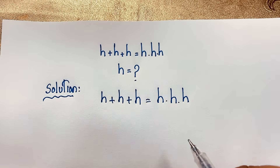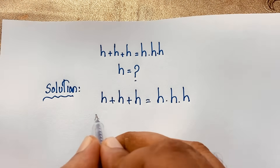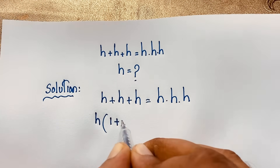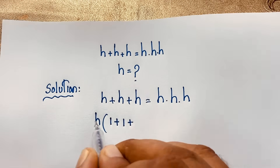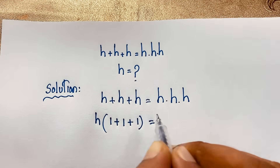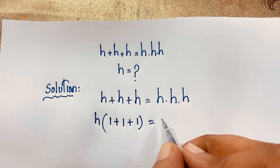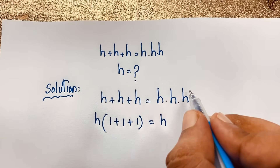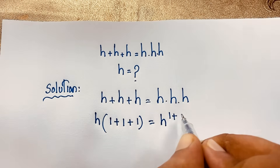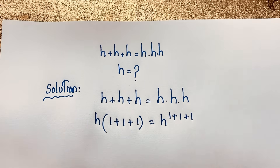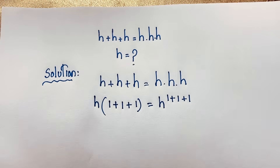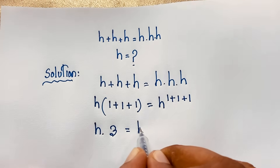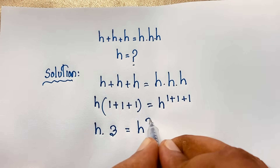Now you can see here h is common. So dividing through: 1 plus 1 plus 1 on the left side, and on the right side each h divided by h gives 1, so we add 1 plus 1 plus 1.